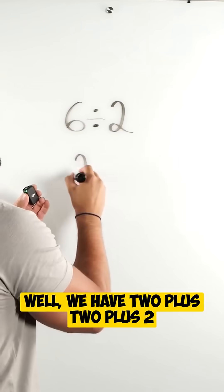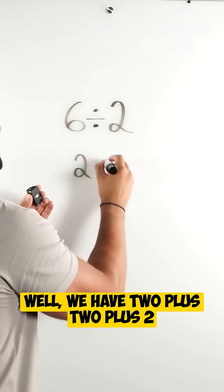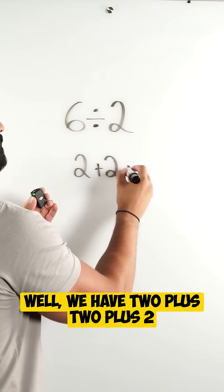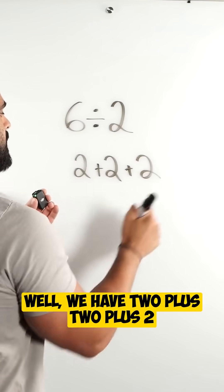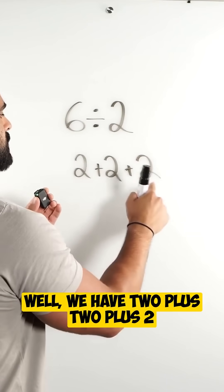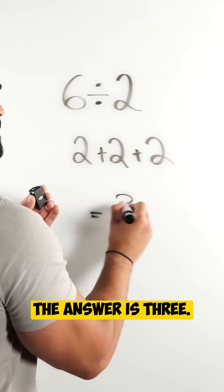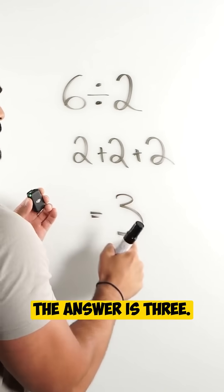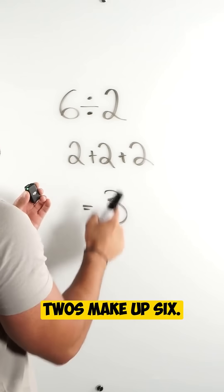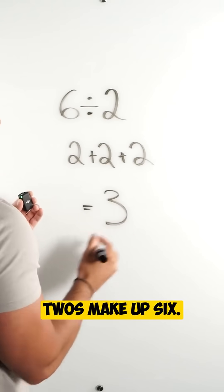Well we have 2 plus 2 plus 2 — 1, 2, 3. The answer is 3 2s make up 6.